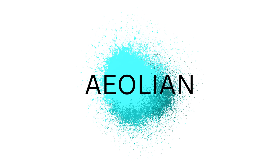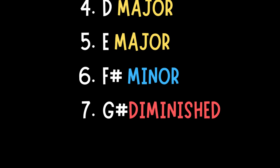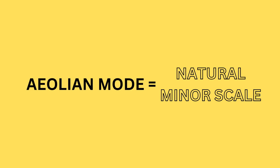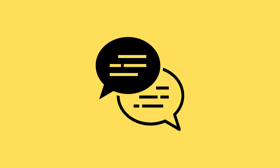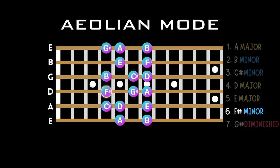The sixth mode of the major scale is referred to as the Aeolian mode, and it's built from the sixth note in our major scale. As the sixth chord is an F sharp minor chord, we can tell that the tonality of this mode is minor also. Much the same as the Ionian mode is identical to the major scale, the Aeolian mode is also identical to the natural minor scale, but we can discuss this more in depth later. Let's take a listen to the Aeolian mode over its respective sixth chord — in this case an F sharp minor chord.